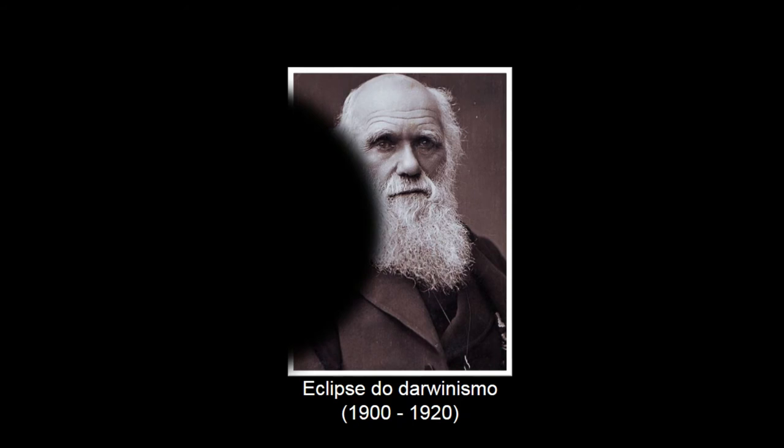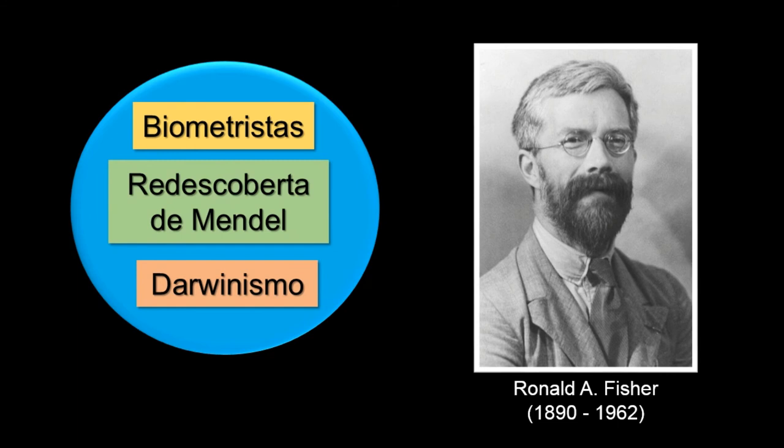Finalmente, Fisher consegue demonstrar que todos os resultados conhecidos pelos biometristas poderiam ser derivados de princípios mendelianos e que a seleção natural poderia operar com a genética mendeliana, promovendo a reconciliação entre os matemáticos e estatísticos e os naturalistas. Meio século depois de sua publicação, a teoria de Darwin agora se mantinha mais sólida, com uma teoria da hereditariedade firme e bem estudada.